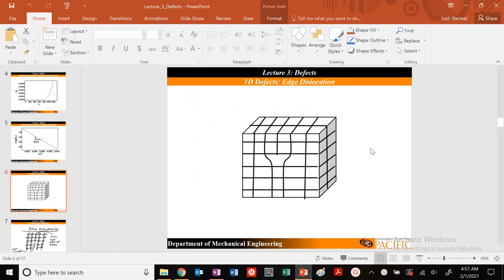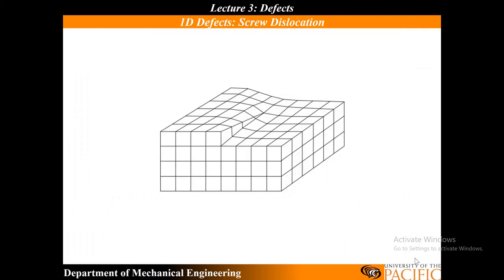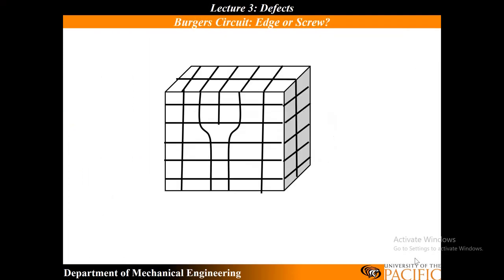Hi, and we're going to do some examples today with edge and screw dislocations. So let's go ahead and draw our Burgers circuit for our first edge dislocation. I know this is an edge dislocation. Why is that? Because I can see this extra half plane of atoms here.